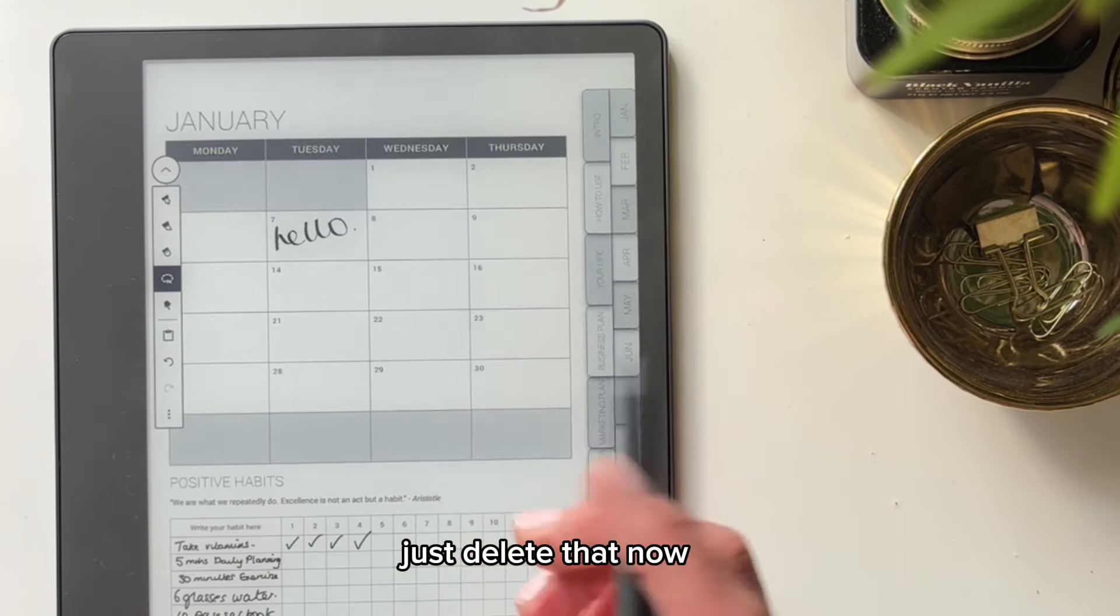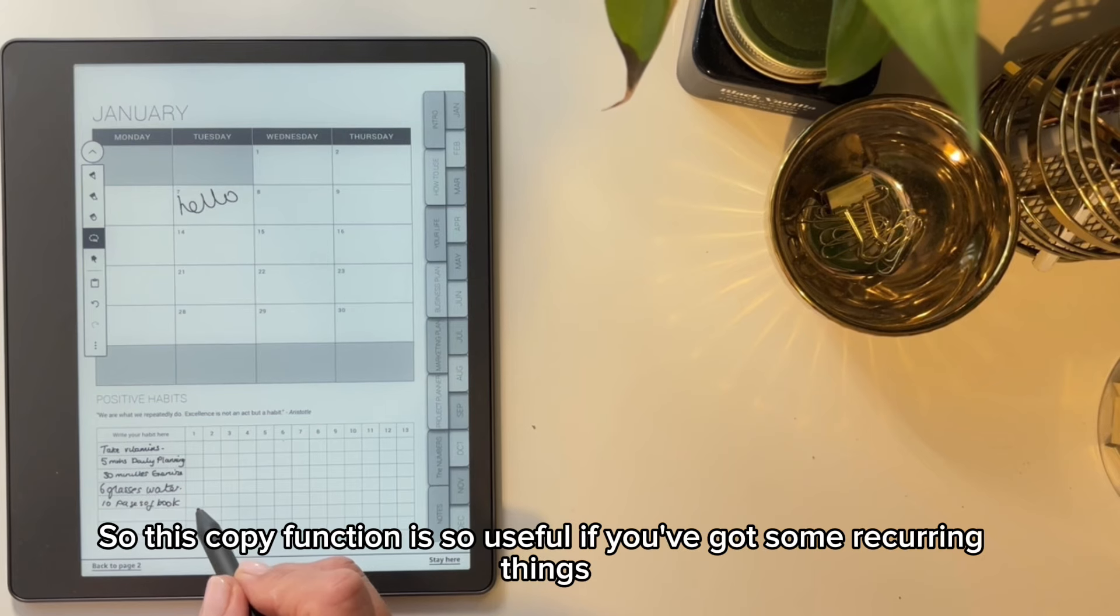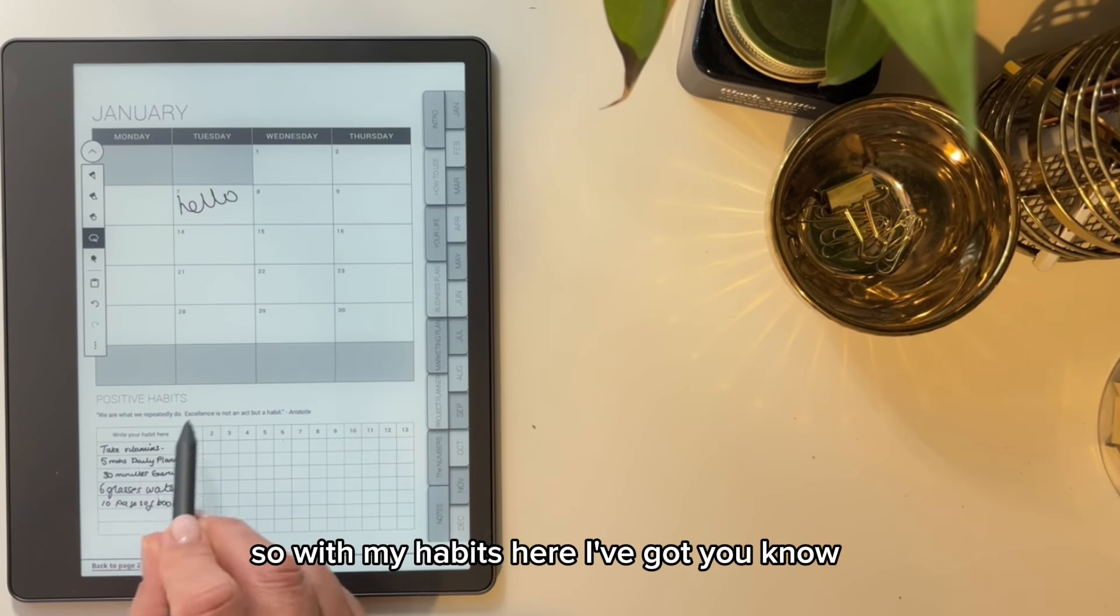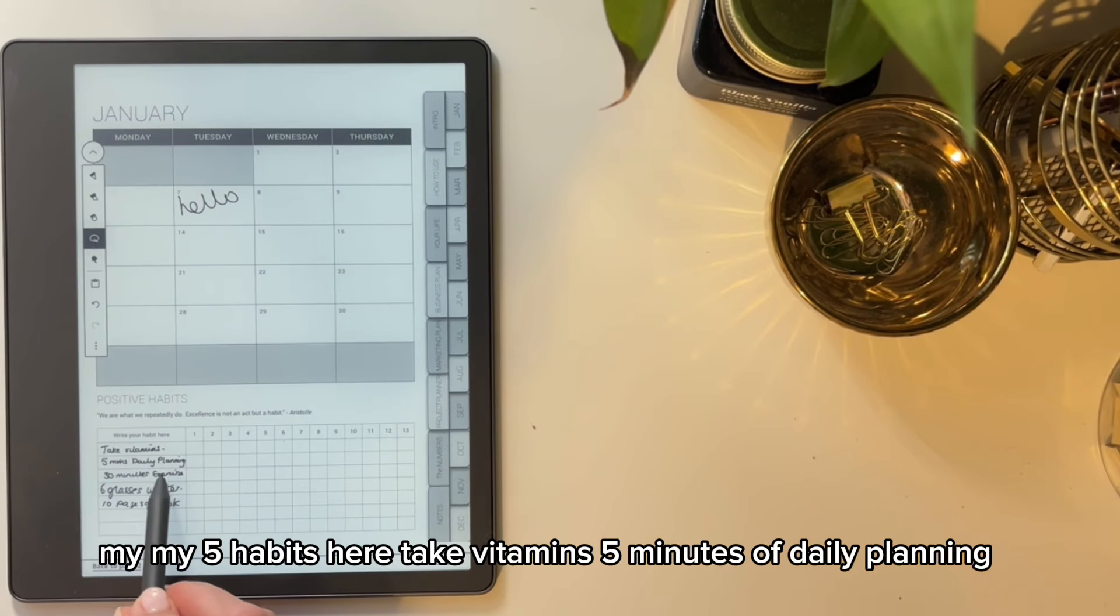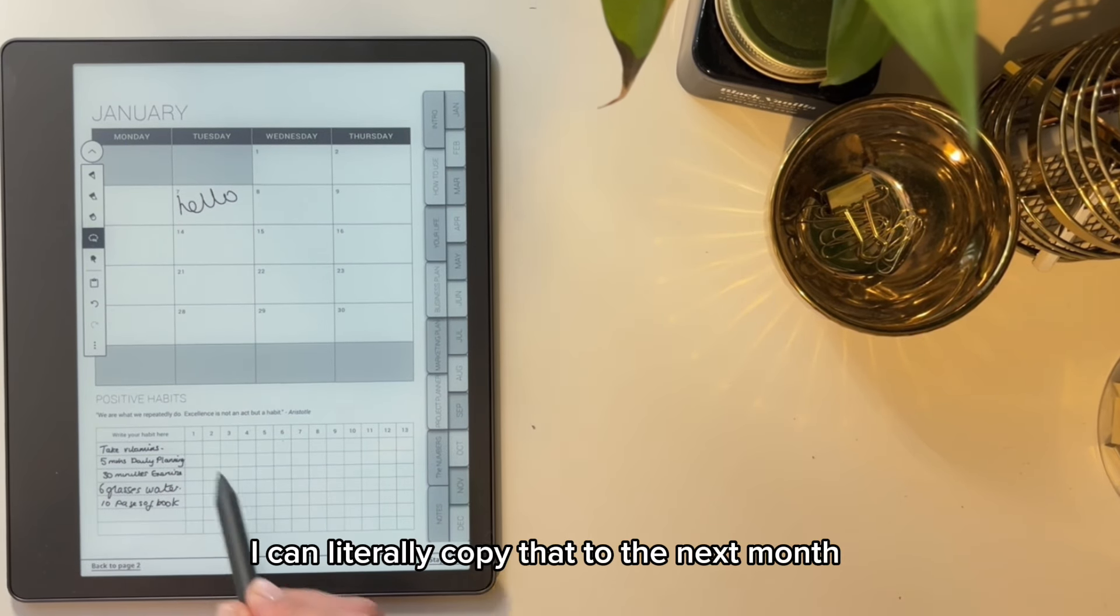Just delete that now. So this copy function is so useful if you've got some recurring things. So with my habits here, I've got my five habits here, take vitamins, five minutes of daily planning. I can literally copy that to the next month. So let's just do that now.